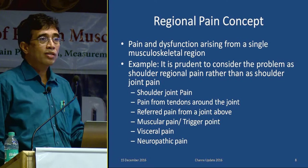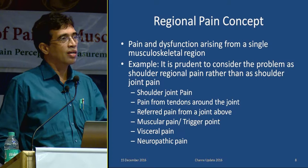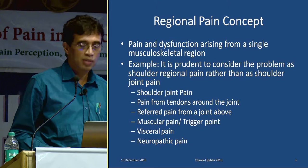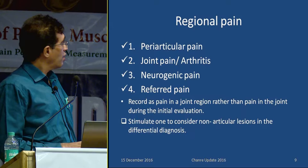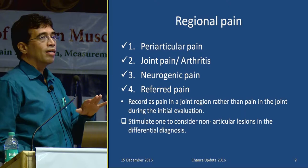If you think of pain only as knee pain, you examine the knee, get an X-ray and MRI of the knee, and get stuck there. You don't know what to do next and end up referring the patient. Always record in your notes 'shoulder regional pain' or 'knee regional pain' — this will open up the differential diagnosis for you.